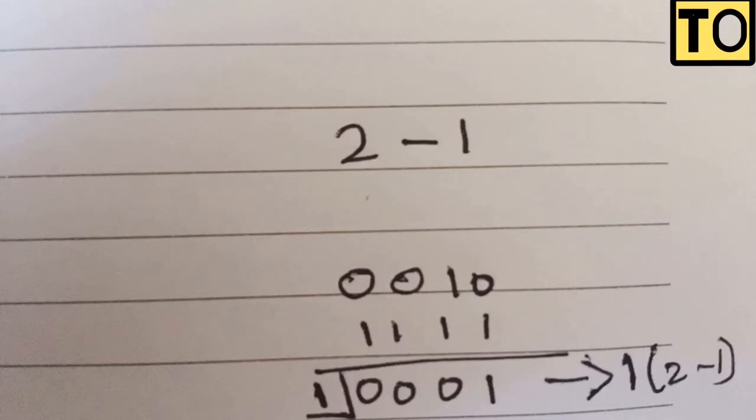I'm going to add 2 and minus 1 using 2's complement. For 2 minus 1 in binary, that gives us 10001, which equals 1. That's the answer.